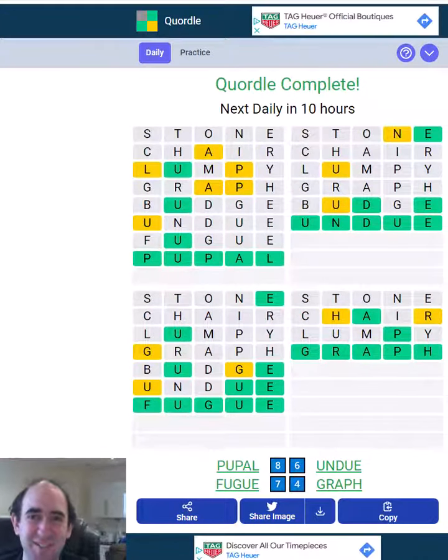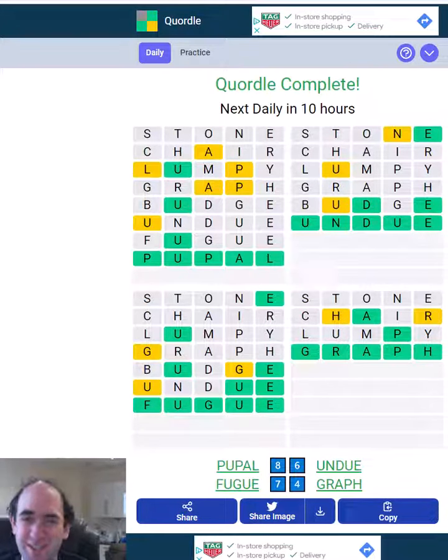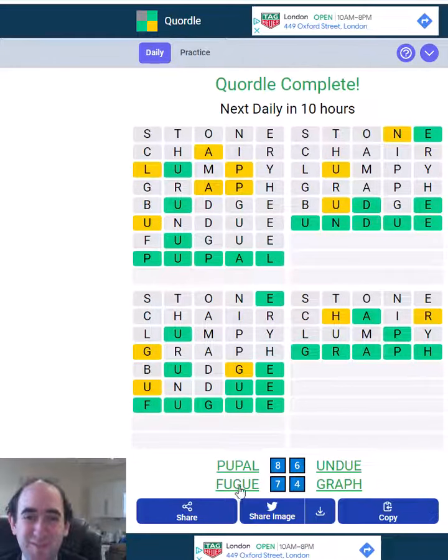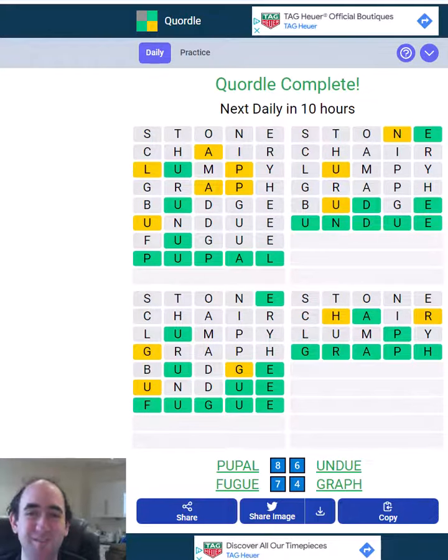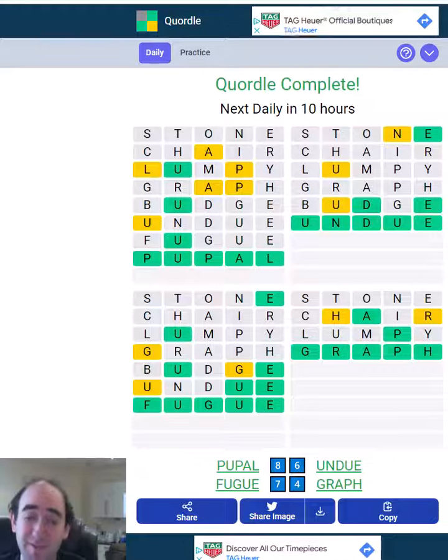Sadly that's just outside a minute which is a bit disappointing, but happy to get there in eight because I think there were a few unusual words there. Unless you started with lots of U's, because there were lots of U's, so if you started with lots of U's that would have given you a lot of information.